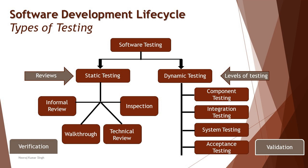If we deep dive into static testing, the approach for conducting it is called review — a generic term referring to reviewing the various work products created during the life cycle. There are four different types of review: informal review, walkthrough, technical review, and inspection. Going from lightweight to heavyweight, the sequence is informal review, walkthrough, technical review, and inspection. Inspection is the most formal review process, while informal review is the least formal. We'll cover these review types in detail in upcoming sessions.